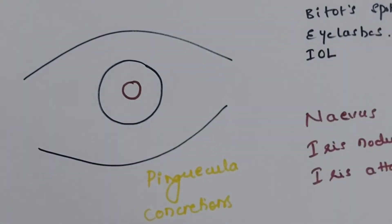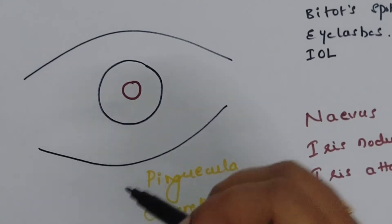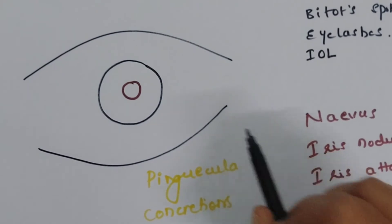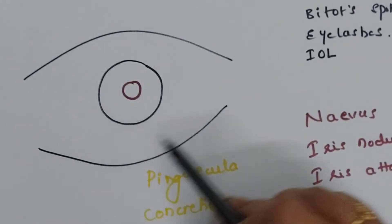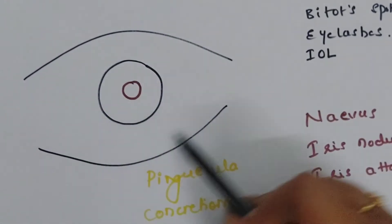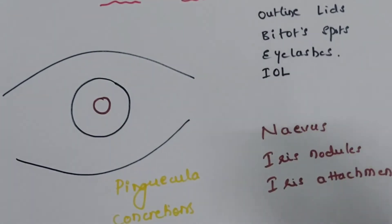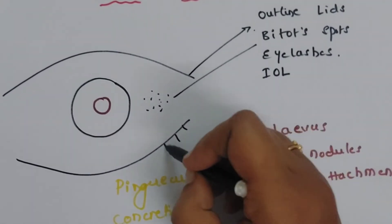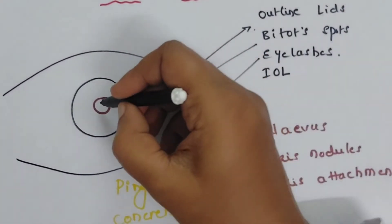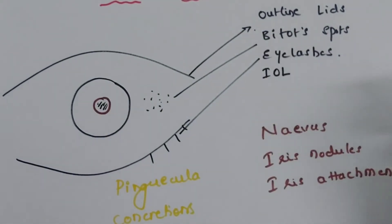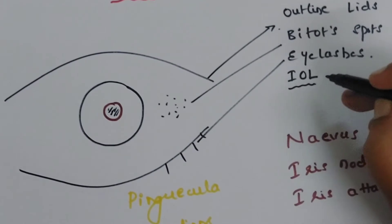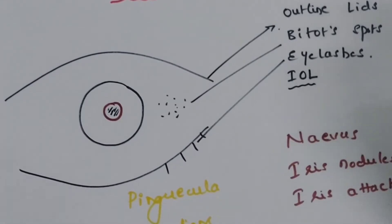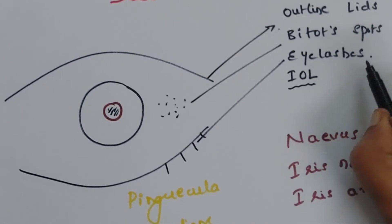Whenever you want to represent anterior segment lesions, you represent how it looks under diffuse illumination and under slit illumination. In the diffuse illumination picture, this represents the eyelid margin, the cornea, and the pupil. Using black color, you can outline the lids, represent the bitot spots on the conjunctiva, mark the eyelashes, and represent the artificial intraocular lens.